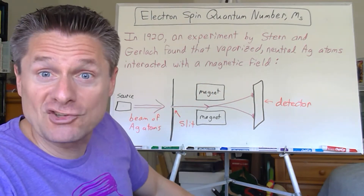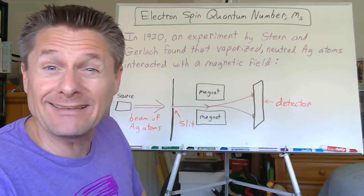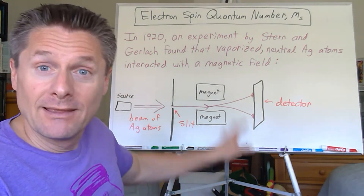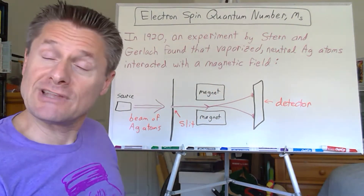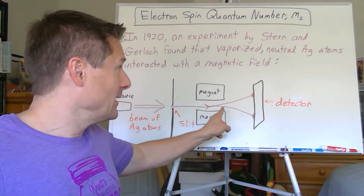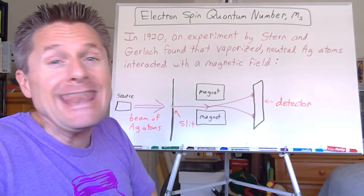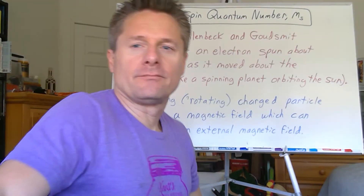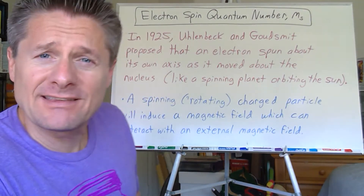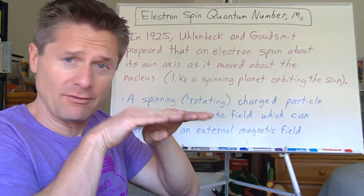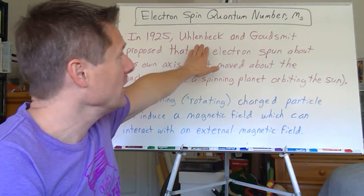The scientists said, 'That's not supposed to happen.' The only way for the beam to curve is if it's a charged species — which it's not — or if it has its own internal magnetic field, which wasn't expected either. They had to think about this for a few years. Half a decade later, in 1925, after much thinking about how neutral silver atoms could produce two beams through a magnetic field...